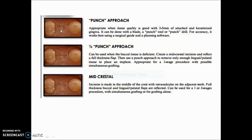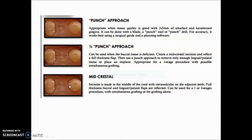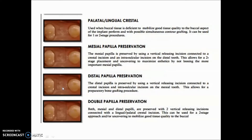The half punch approach is used when the buccal tissue is deficient. A mid-crestal incision is made, a full-thickness flap is reflected, and a punch approach removes only enough lingual or palatal tissue to place the implant — appropriate for a one-stage procedure with possible grafting. The simple mid-crestal incision is made in the middle of the crest with intra-sulcular extension to adjacent teeth; full-thickness buccal and lingual flaps are reflected and can be used for one or two-stage procedures with grafting.